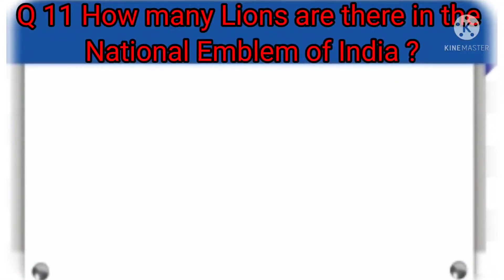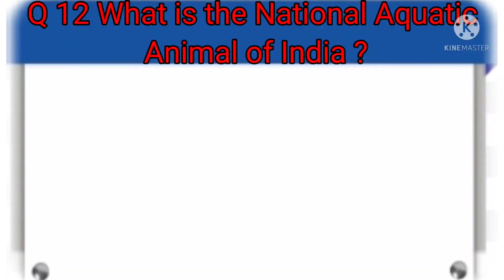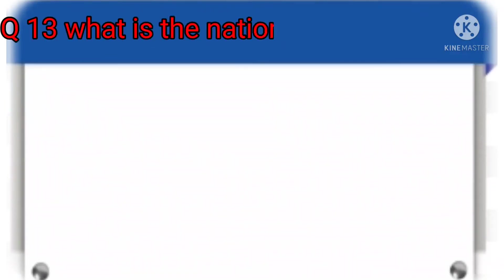Question number 11: How many lions are there in the national emblem of India? The answer is 4. Question number 12: What is the national aquatic animal of India? The answer is the Gangetic River Dolphin.